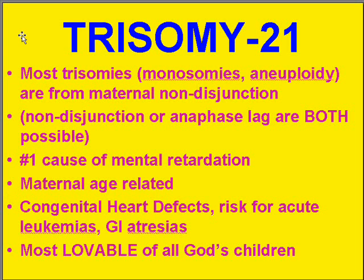There are monosomies, but usually only one additional chromosome, and they are therefore aneuploid. Besides non-disjunction, anaphase lag is also another observed mechanism. Trisomy 21 is the number one cause of mental retardation, completely related to maternal age — which is why older women wanting to have babies usually get amniocentesis and have the chromosomes tested early.